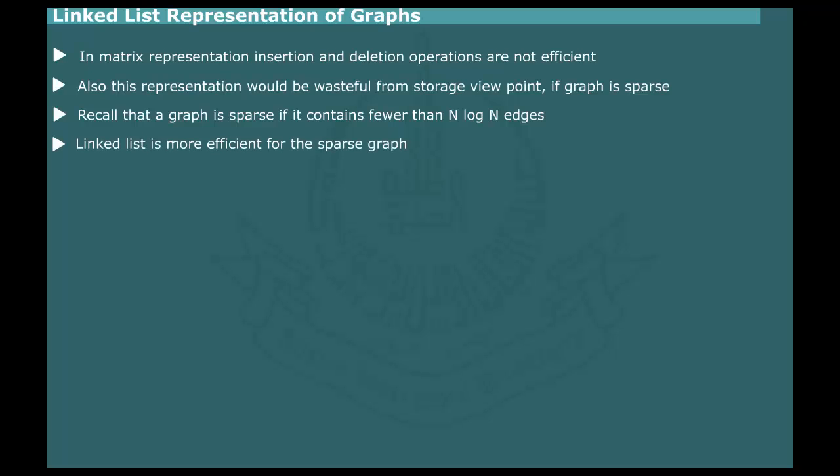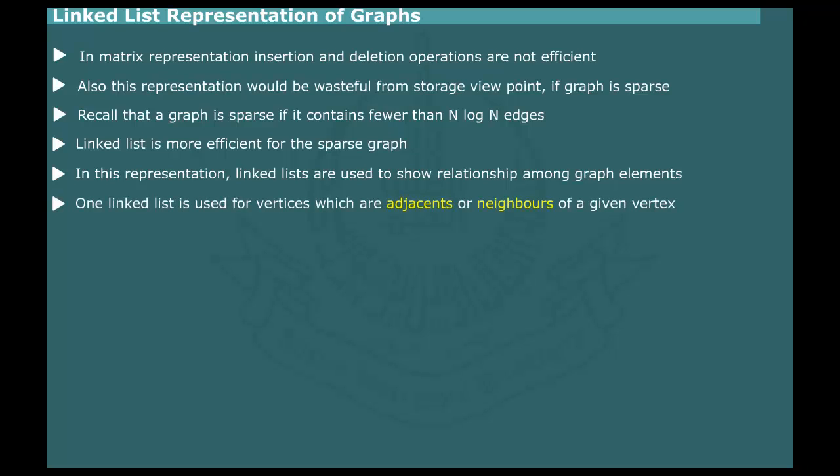An alternative representation that uses Link List is more efficient for the sparse graph. In the Link List Representation, there are different ways of showing relationship among the graph elements. A common approach is to use a Link List for a set of vertices which are adjacent or neighbours of a given vertex.